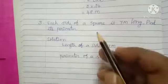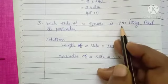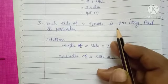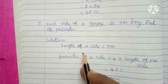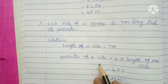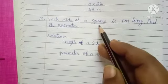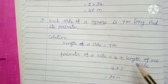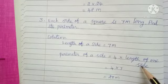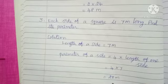Third sum — same method, but here the shape is a square. So one side value is given: 7 meter. Side equals 7 meter. Perimeter of a square equals 4 multiply the length of one side. So 4 multiply 7 equals 28 meter.